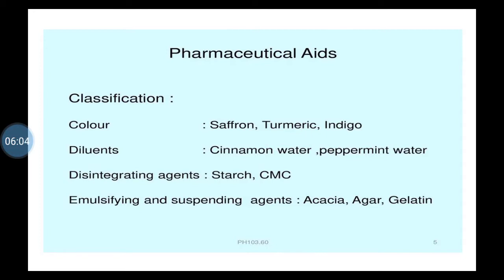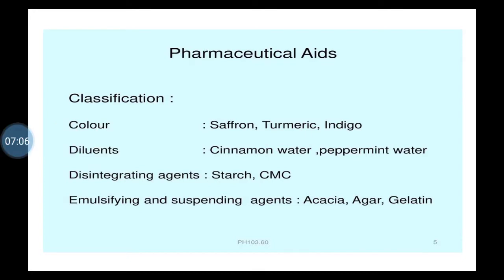Then diluent — a chemical which is added to a pharmaceutical formulation to adjust its strength or weight. Lactose is an example; it is an inert substance used to give consistency to formulations like tablets. For example, calpol, crocine, metacin tablet contains paracetamol 500 mg as the active pharmaceutical ingredient, but to give adequate strength to the formulation, lactose is used as a diluent.